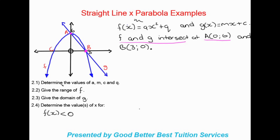Question one asks us to determine the values of A, M, C, and Q. A and Q come from the parabola equation, while M and C come from the straight line equation. We are essentially finding the different parts of the equations to determine the final equations of these two graphs. Let's start with f(x), the parabola.